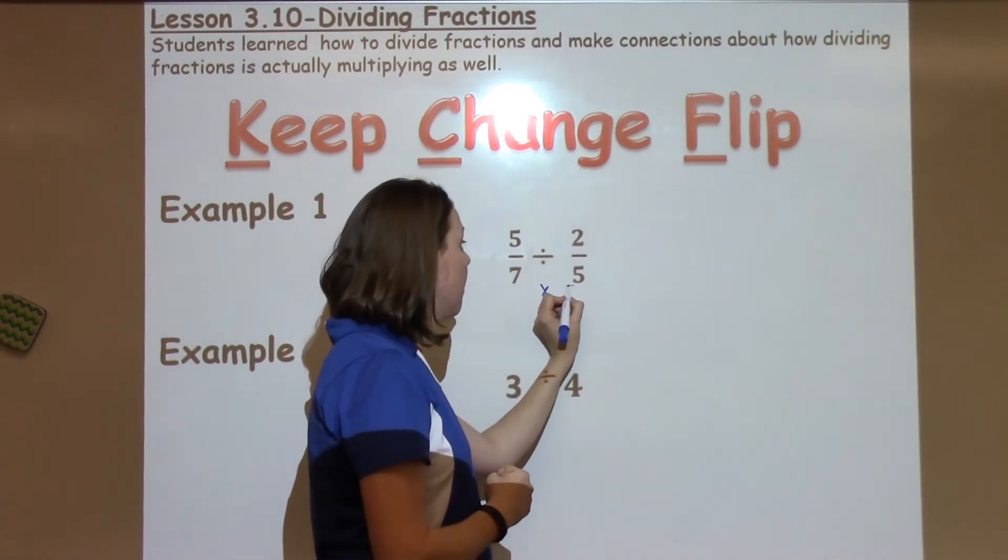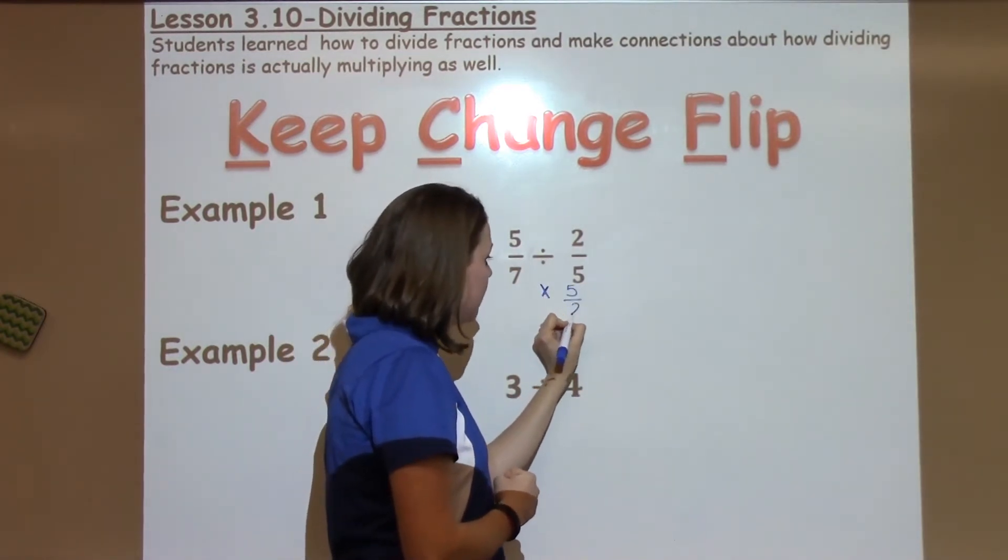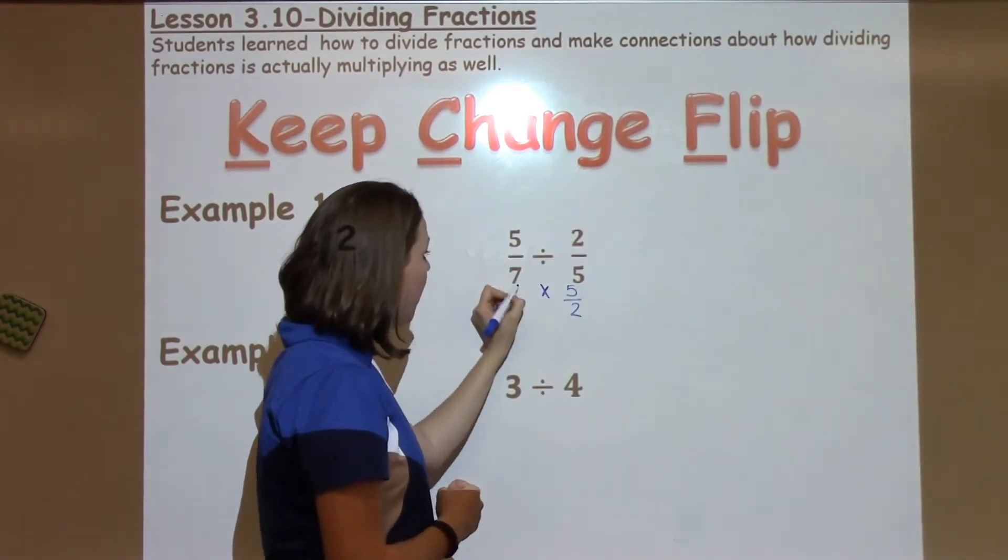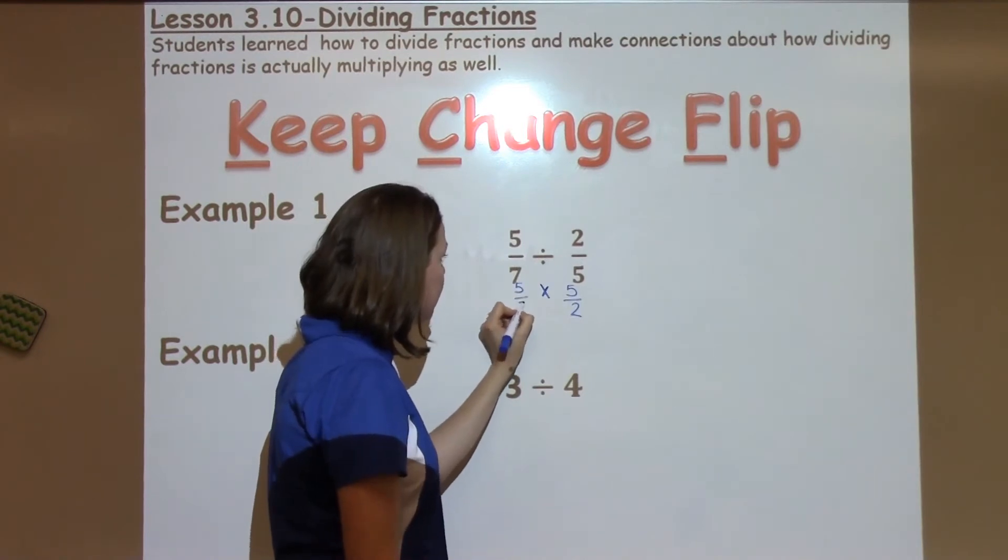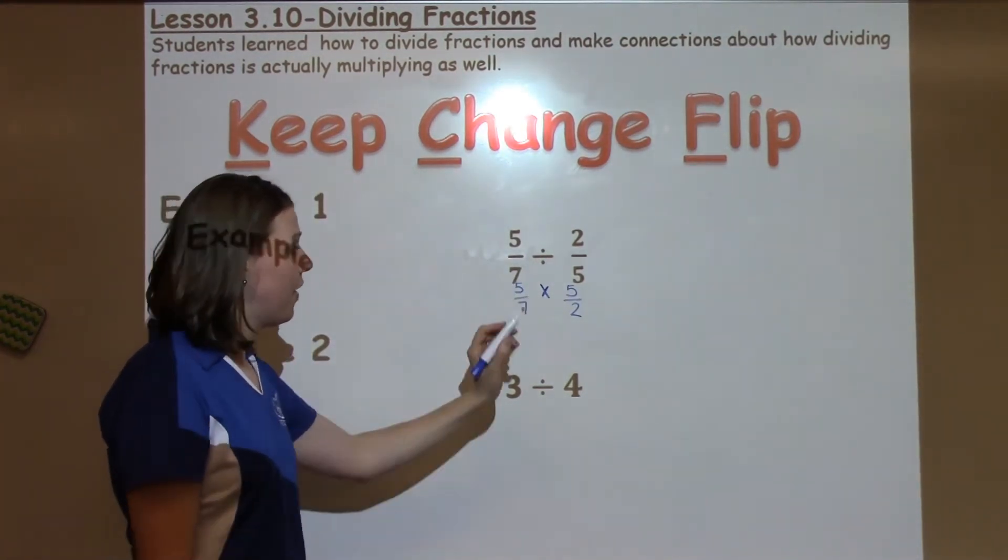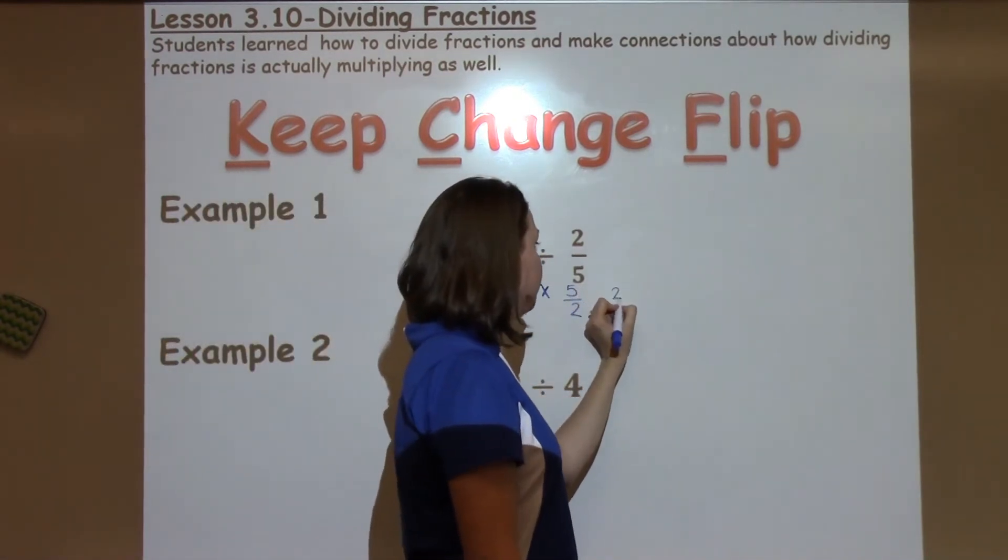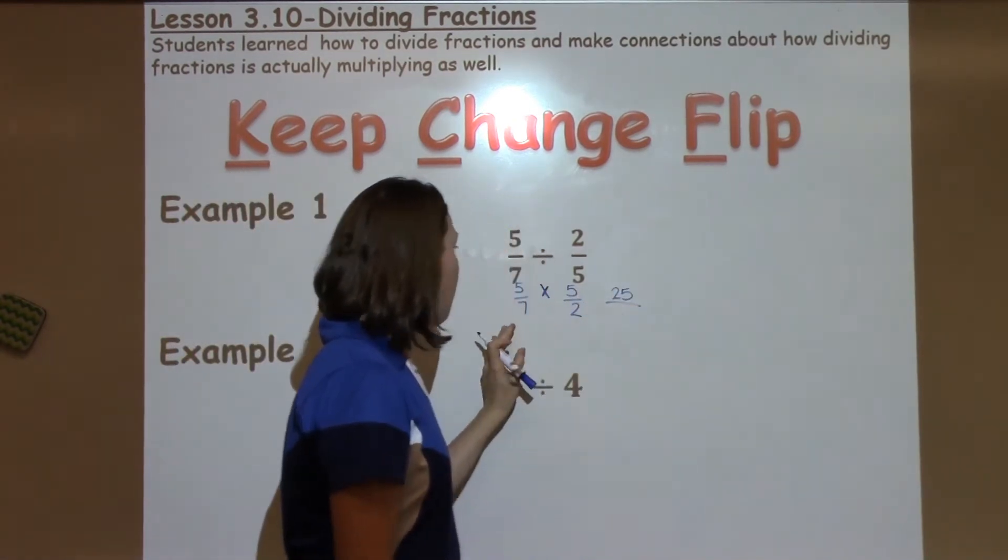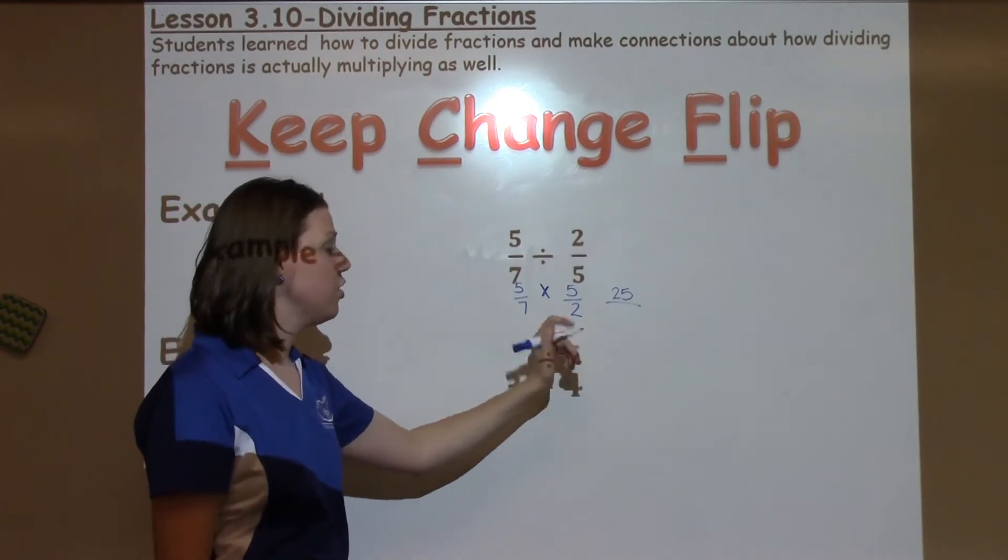So this becomes 5 over 2. I'm going to go ahead and rewrite the thing that I kept, which is my 5 sevenths. Now I just need to multiply. I have 5 times 5 is 25. My denominator is 7 times 2, which is 14.